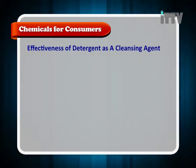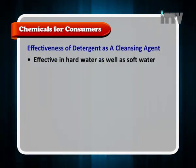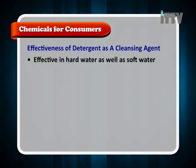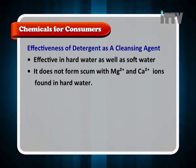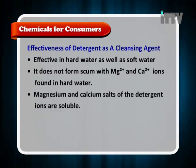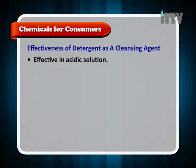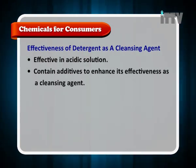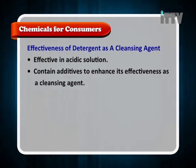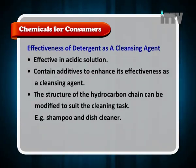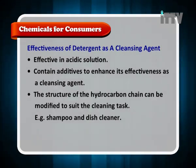Effectiveness of detergent as a cleaning agent: detergents are effective in hard water as well as soft water. They do not form scum with Mg²⁺ or Ca²⁺ ions found in hard water, because magnesium and calcium salts of the detergent ions are soluble. Detergents are also effective in acidic solutions. Detergents contain additives to enhance effectiveness, and the structure of the hydrocarbon chain can be modified to suit the cleaning task — for example, to make shampoo and dish cleaner.